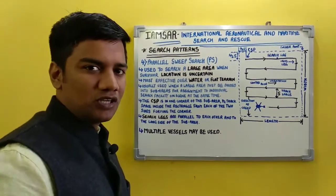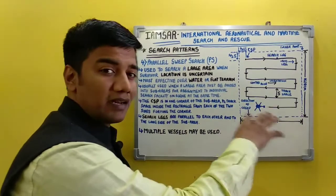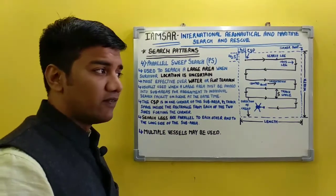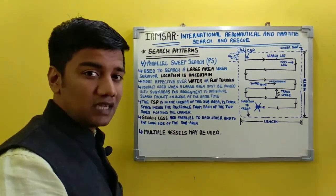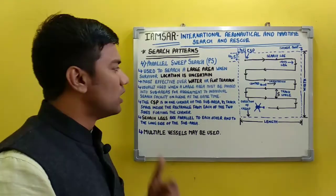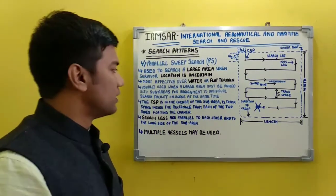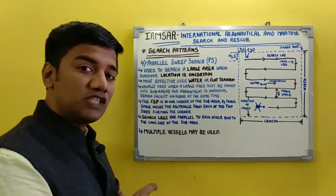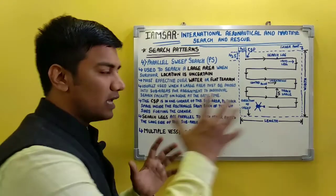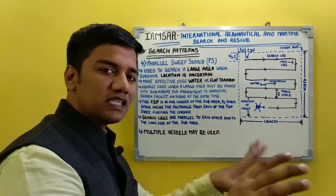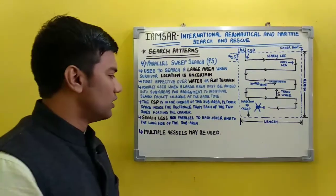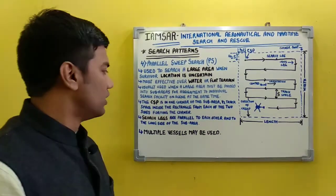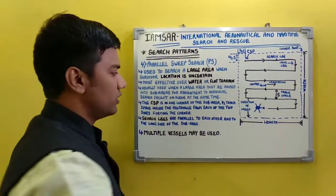Search pattern number four is the parallel sweep search. As the name suggests, you are going to sweep an area parallelly in order to search. Parallel sweep search is used to cover a larger area when the location of the survivor is uncertain. It is most effective over water or flat terrain. It is usually used when a larger area must be divided into sub-areas for assignment to individual search facilities on scene at the same time.